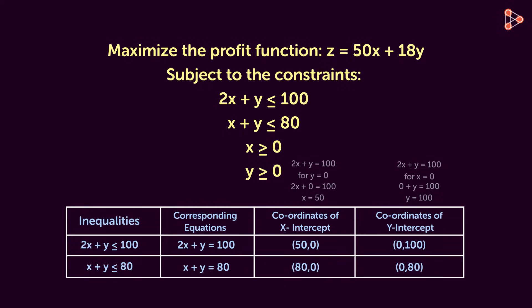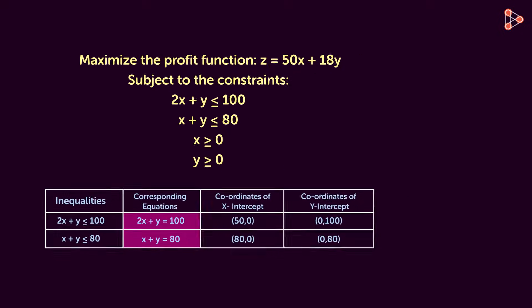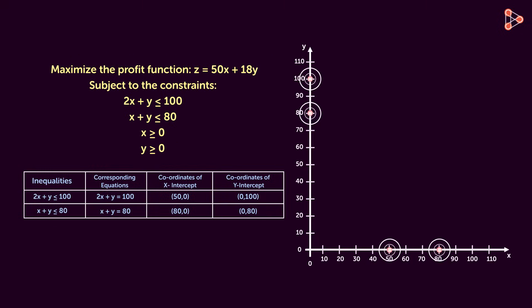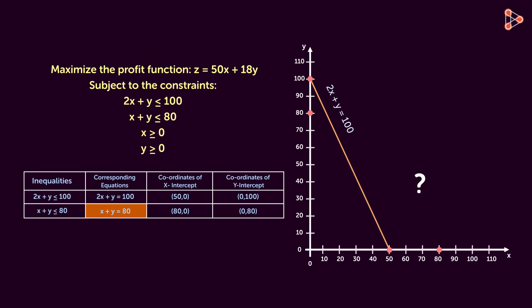With these points, let's draw the two lines representing these two equations on a graph. Let's mark the four points first. The first line represents the equation 2x + y = 100. Likewise, let's draw the second line representing this equation — give it a try. Here's the line representing the equation x + y = 80.